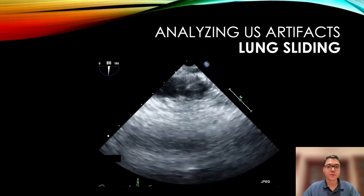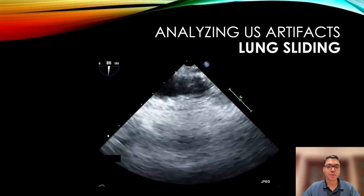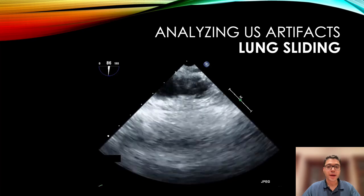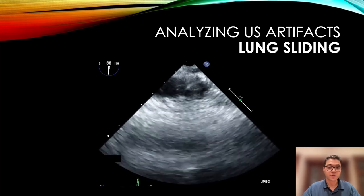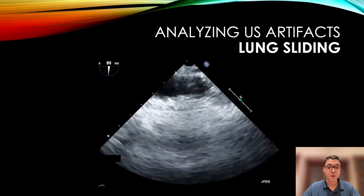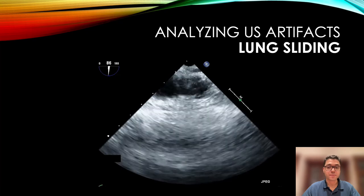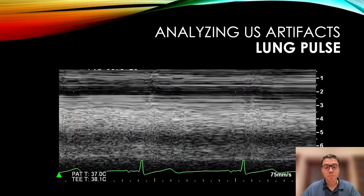Now let's discuss lung sliding. This is the normal sliding motion of the visceral and parietal pleura against each other with inflation and deflation of the lung. The absence of lung sliding is associated with the presence of a pneumothorax or could also signify selective contralateral intubation. Lung pulse is the normal rhythmic movement of the pleural line induced by pulsatile blood flow through the pulmonary vessels. Here we see this phenomenon in M-mode imaging. The absence of a lung pulse is associated with the presence of a pneumothorax.